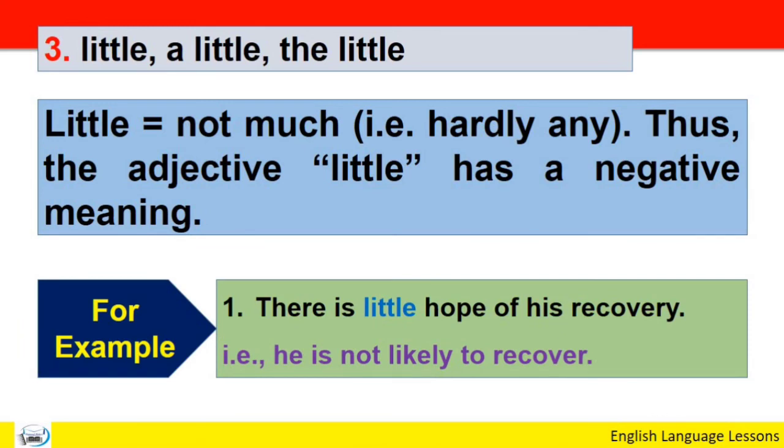For example, there is little hope of his recovery. جب کسی کی صحت کے حوالے سے ان کی صحتیاب ہونے کے حوالے سے بلکل امید نہ ہو تو ہم اس طرح کا sentence use کرتے ہیں. اس کا مطلب یہ ہوتا ہے: He is not likely to recover کہ وہ صحتیاب نہیں ہوگا.